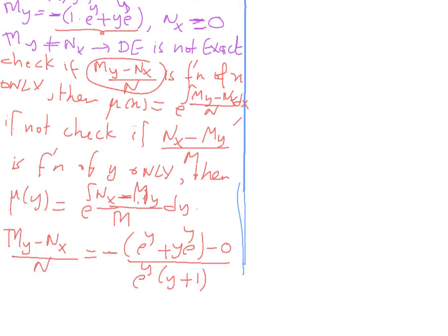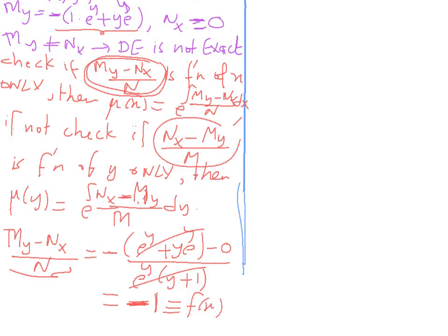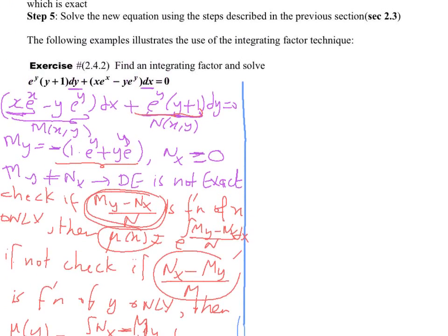Computing (M_y − N_x)/N: M_y − N_x = 0 minus (e^y + ye^y) divided by N = e^y(y + 1). The (y+1) cancels and the e^y cancels, giving −1. When the result is a constant, it can be treated as a function of x only. So μ(x) = e^(∫−1 dx) = e^(−x). This is the integrating factor. We now multiply it into the differential equation to make it exact.